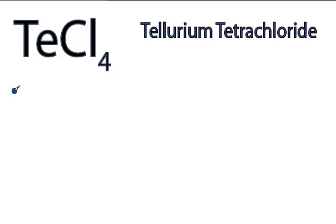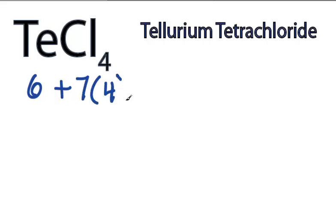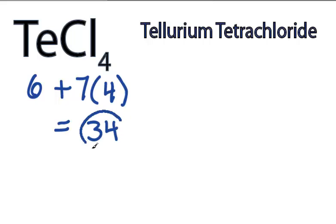This is the Lewis structure for TeCl4, tellurium tetrachloride. Tellurium is in group 6, sometimes called 16, and has 6 valence electrons. Chlorine has 7, and we have 4 chlorine atoms, for a total of 34 valence electrons for TeCl4.